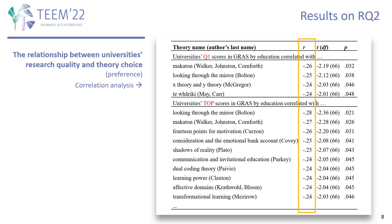Regarding the results on RQ2, theory preference in a university for some specialized theories was found to be negatively correlated with research quality scores at the 0.05 significance level.